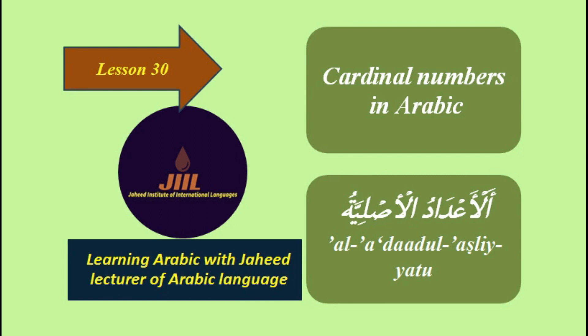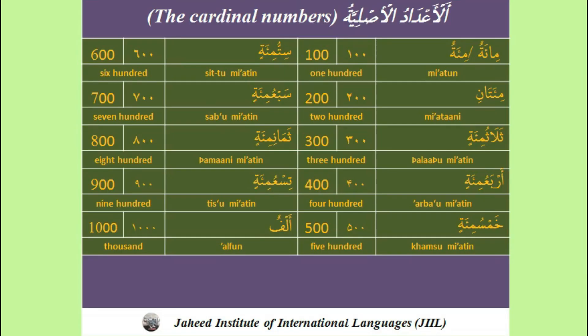As I said before, cardinal numbers in Arabic — the cardinal numbers from 1 to 100 were illustrated in the last lesson. Now I'm going to explain the rest of them. Look at the examples. 100.